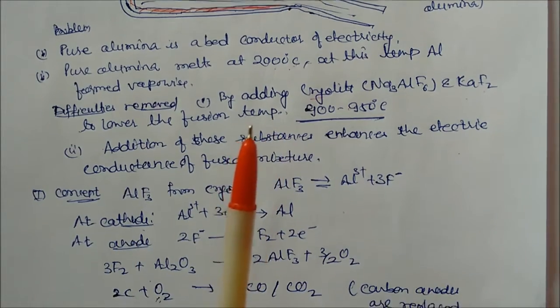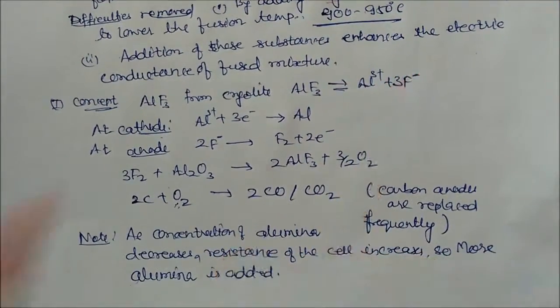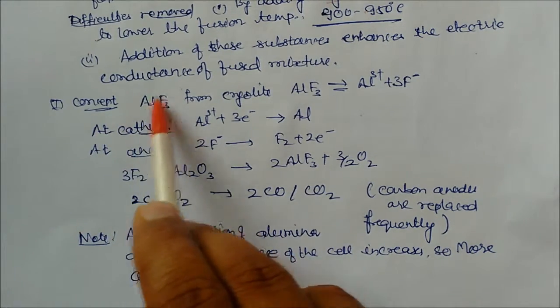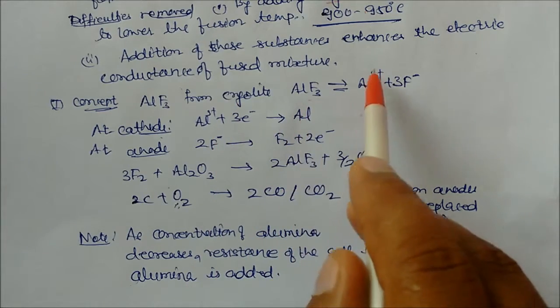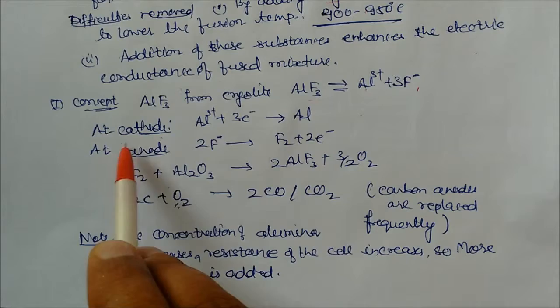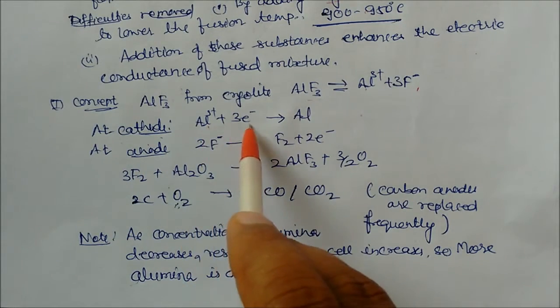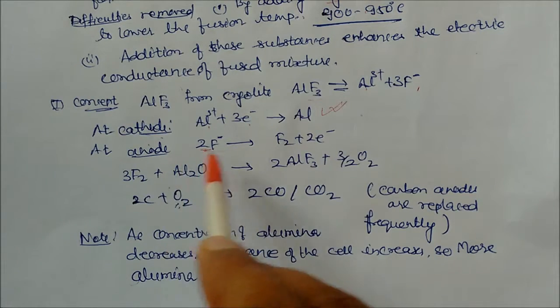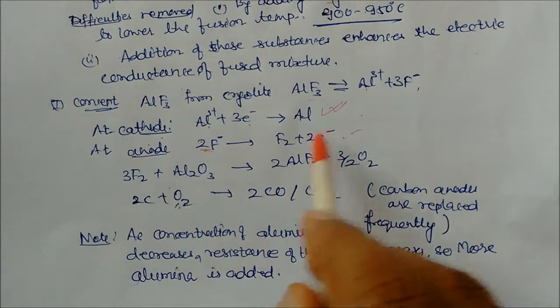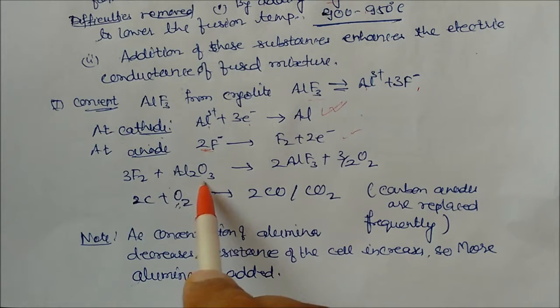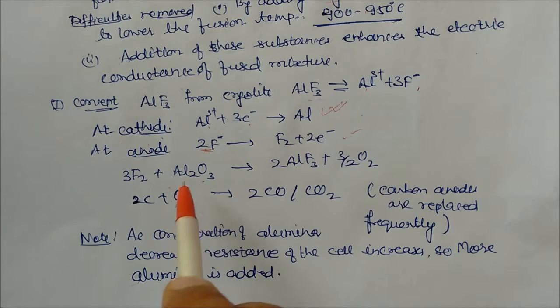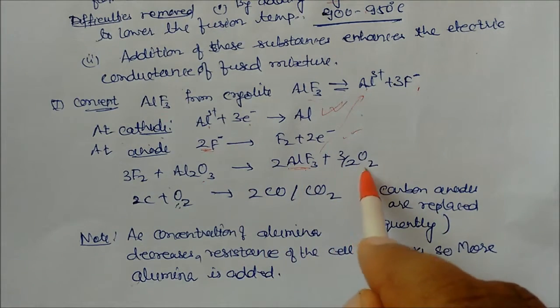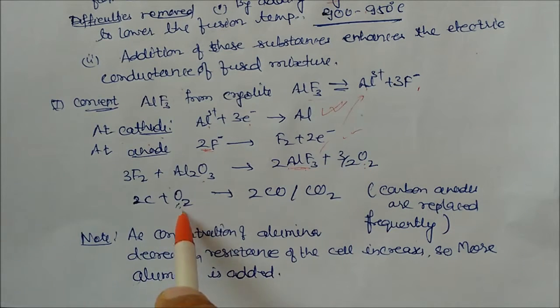So how is aluminium extracted from the cryolite and alumina? So one concept is that AlF3 that we get from the cryolite, it is decomposed into Al3+ and 3F-. So what happens at cathode? This Al3+ will take electrons and this is your reduction. And fluoride ion at anode oxidation takes place, electrons will be lost. Now this fluorine, it will react with aluminium Al2O3, alumina in the molten state, and it will convert to AlF3.